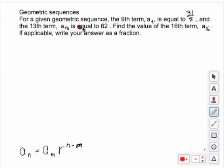Okay, so in this case, for a given geometric sequence, the 9th term is 31 over 8, and the 13th term is equal to 62, and they want to know what a sub 16 is.